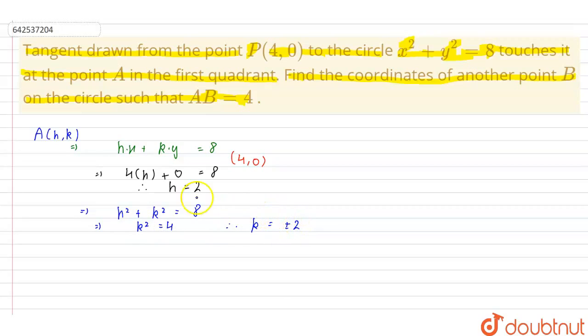But, since A is a point in the first quadrant, therefore, k must be equal to 2. Therefore, the point A becomes (2, 2).